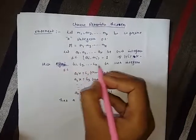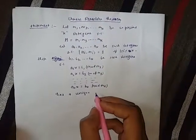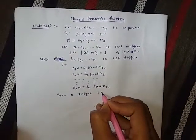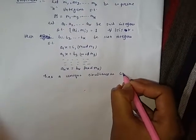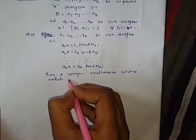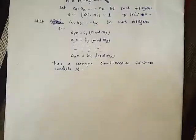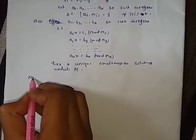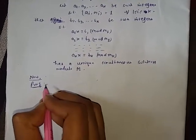Then b1, b2, ..., bk be such integers such that this system of linear congruences has a unique simultaneous solution modulo capital M, where capital M is equal to the product of m1, m2, ..., mk. Now we see the proof of this theorem.